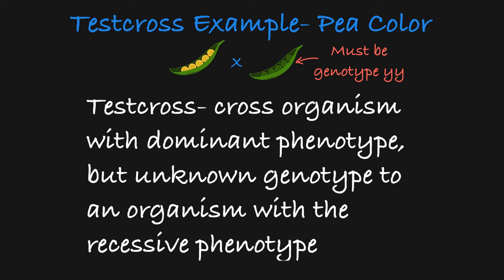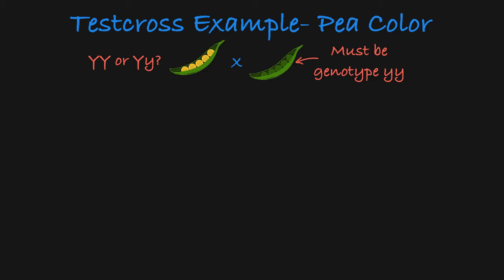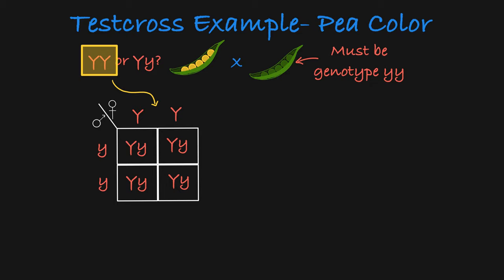The resulting offspring will tell you everything you need to know about the genotype of the parent with the dominant phenotype. In this case, we are unsure if this yellow pea parent is homozygous dominant or heterozygous. If the plant is homozygous and we cross it to a green pea plant, then all of the offspring will be heterozygous and therefore have yellow peas.